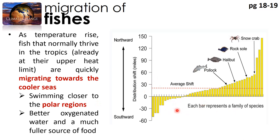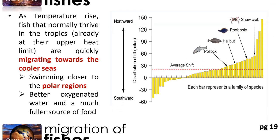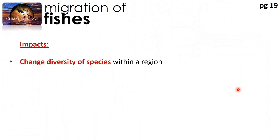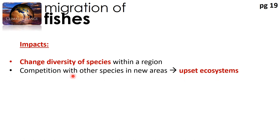From this graph, many species have migrated either southwards or northwards, with more migrating towards the north pole — the average shift is towards the north pole. Because of the changing migration patterns, this changes the diversity of species within a certain region, and there will be competition with other species in the new areas that fish migrate to. This will upset ecosystems.